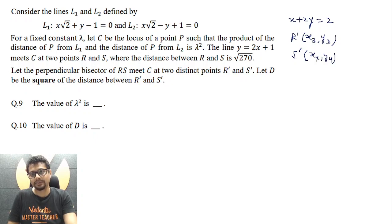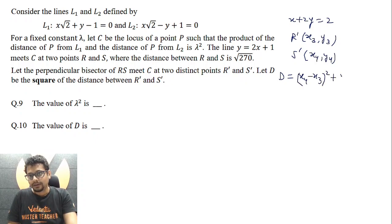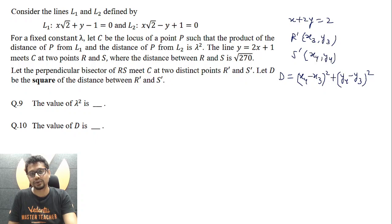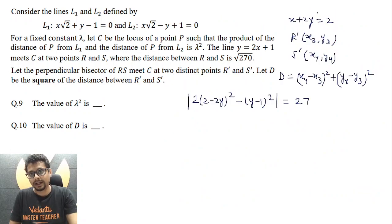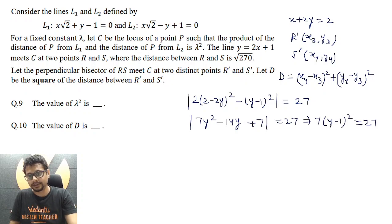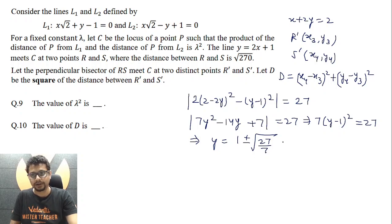Let R' = (x₃, y₃) and S' = (x₄, y₄). We need d = (x₄−x₃)² + (y₄−y₃)². Since R' and S' lie on both x + 2y = 2 and the curve C with λ² = 9 (so 3λ² = 27), I solve these simultaneously by substituting x = 2 − 2y into the curve equation. This gives y = 1 + √(27/7) or y = 1 − √(27/7), so |y₄ − y₃| = 2√(27/7).